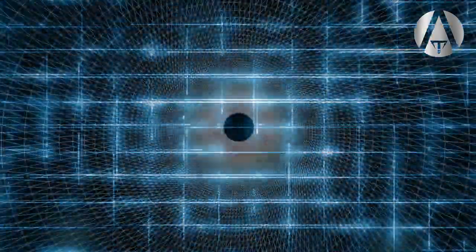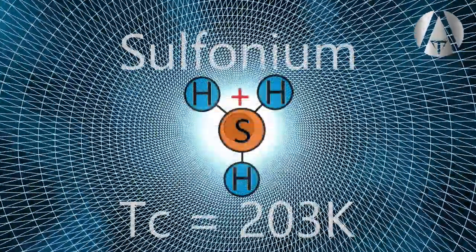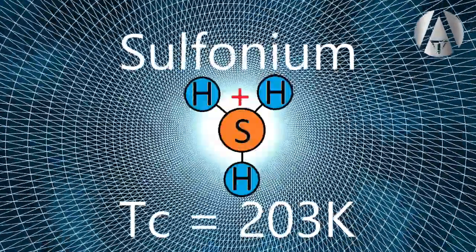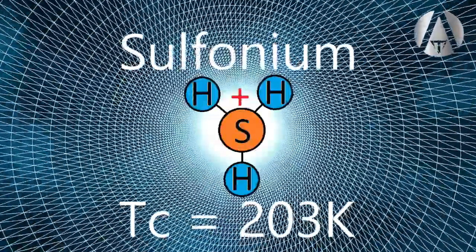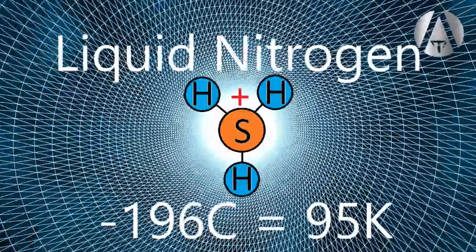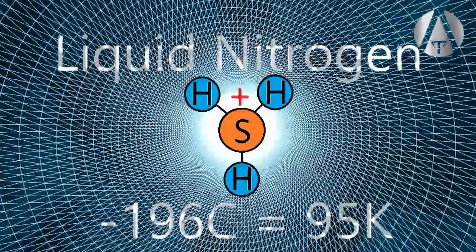The previous record of 203 Kelvin with sulfonium translates to about minus 70 Celsius, still cold, but definitely within the capability of liquid nitrogen, which boils at minus 196 Celsius. Now the sulfonium was under millions of bars of pressure to superconduct at 203 Kelvin.